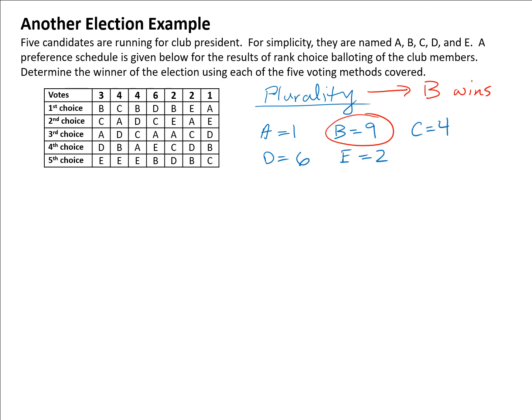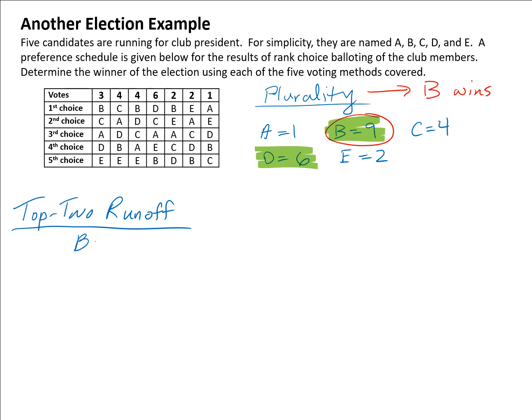Next, let's look at the runoff methods. We'll start with top two runoff. Both runoff methods require knowing the initial first choice votes, which we have from plurality. With top two runoff, we take the two candidates with the most first-choice votes — that would be B, who had the most, and D, who had the second most — and then we look at how they do if we redistribute everyone else's votes.